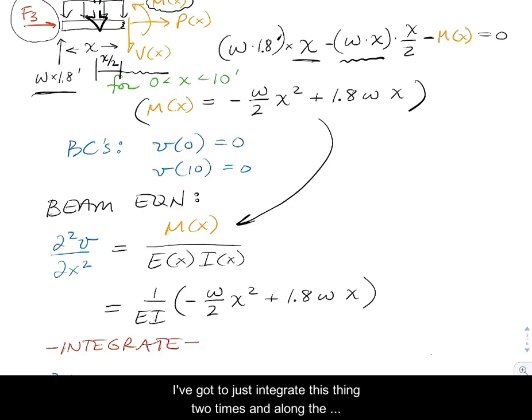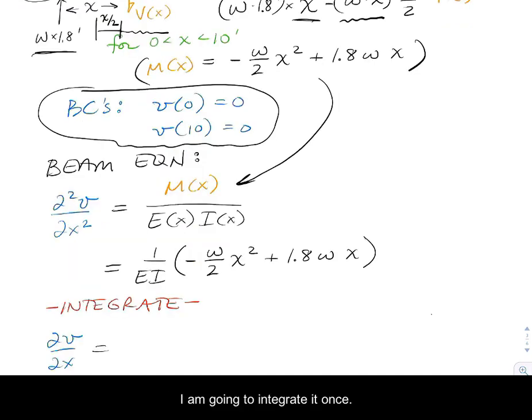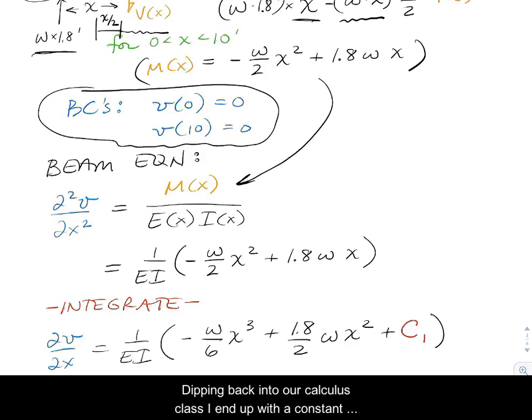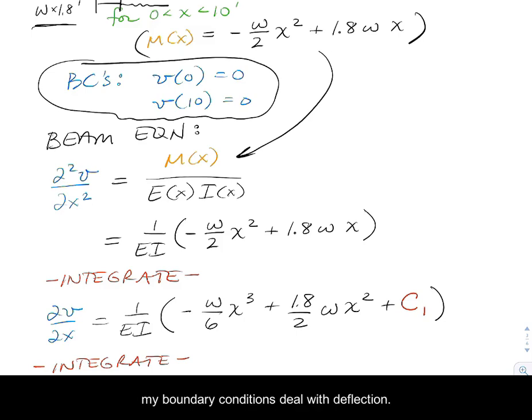Now I've got to integrate this thing two times. Along the way, I'm going to use boundary conditions when appropriate. My boundary conditions both involve deflection or displacement. So I'm going to integrate it once. Dipping back into our calculus class, I end up with a constant of integration C1. I have no boundary condition to apply here because both of my boundary conditions deal with deflection.